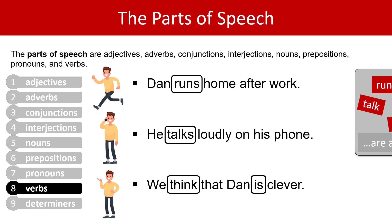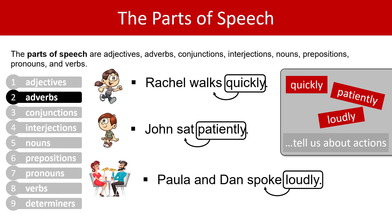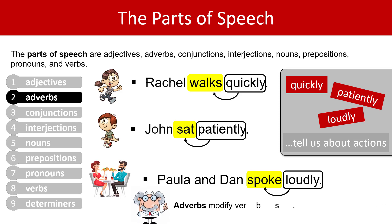Look at this word: 'loudly'. Do you remember this from our other example? 'Paula and Dan spoke loudly' — we saw this on our adverbs section. Adverbs tell us about actions, and we now know that actions are verbs. In the bottom example, 'spoke' is our action — it's a verb. 'Walks' is a verb, 'quickly' is an adverb telling us about a verb, and 'patiently' is an adverb telling us about a verb. We can now say something smarter about adverbs: adverbs modify verbs.